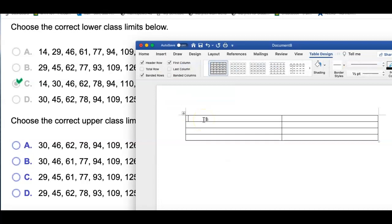So the first class lower limit is 14. Next is 30. Next is 46 and so on, 62 and so on.